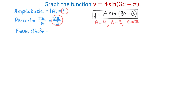Next we will find the phase shift, and the formula is c over b. We will replace c with pi and b with 3, so the phase shift is pi over 3. This is the x-coordinate where the cycle will begin.